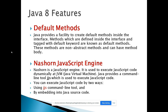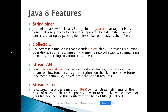Java 8 includes a JavaScript engine that allows you to run JavaScript code within the JVM layer using the jjs command-line tool, and also by embedding JavaScript into Java source code. Additionally, there is the StringJoiner class in the java.util package, which allows you to construct strings using delimiters such as commas or hyphens. The Collectors class is a final class used to summarize stream elements based on different criteria.